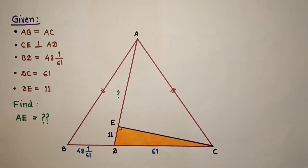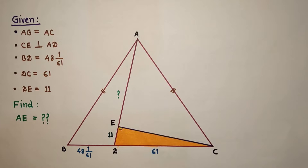We have two methods to find the length of AE: one is Pythagoras theorem and the other is Stewart's theorem. First we will use Stewart's theorem, and before that let's discuss what Stewart's theorem is.